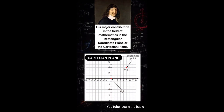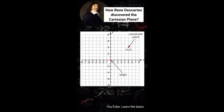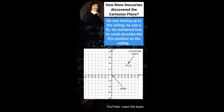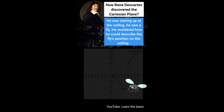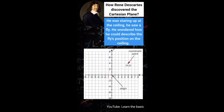His major contribution in the field of mathematics is the rectangular coordinate plane, or the Cartesian plane. He explained how the location of a place could be measured by the use of X and Y coordinates. How did Rene Descartes discover the Cartesian plane? He was staring up at the ceiling and saw a fly. He wondered how he could describe the fly's position on the ceiling — and the Cartesian plane was born.